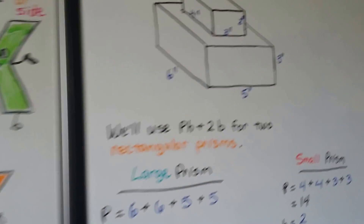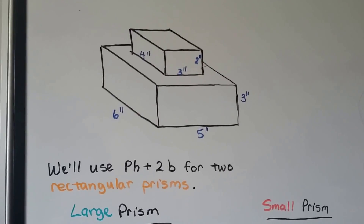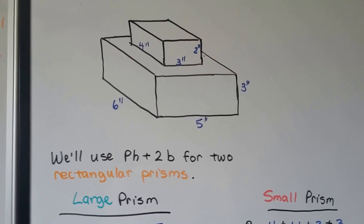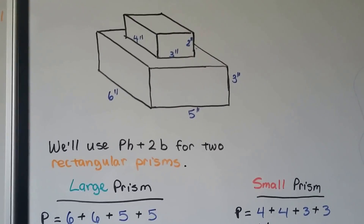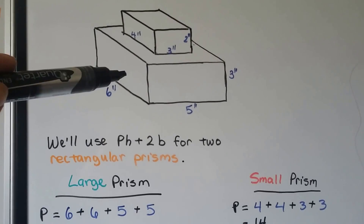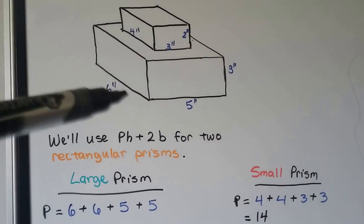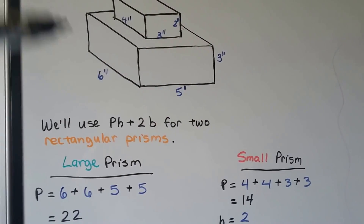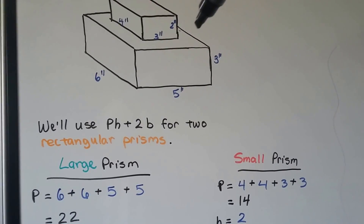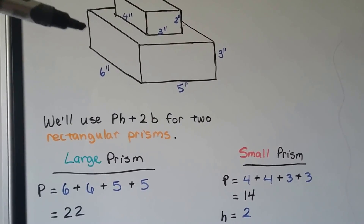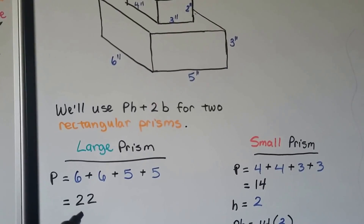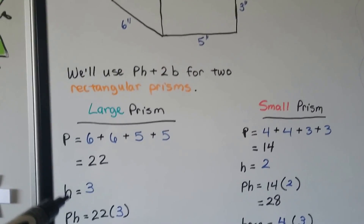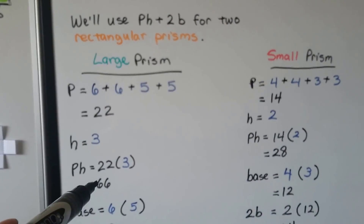Let's try another one. This could be a cake or a couple of wooden blocks. We're going to use pH plus 2B for two rectangular prisms. We have a large rectangular prism and a small rectangular prism, and measurements are in inches. The perimeter of the large one uses a 6 on this side, a 6 hiding on the other side, a 5 in the front, and a 5 in the back — which gives us 22. The height is 3 inches.